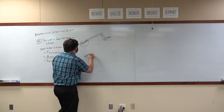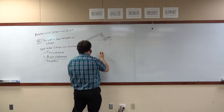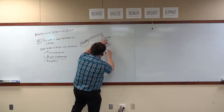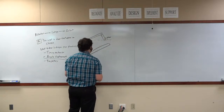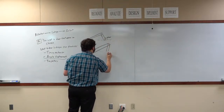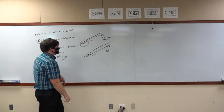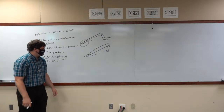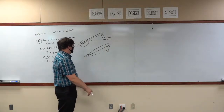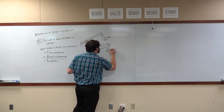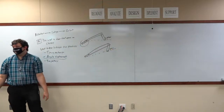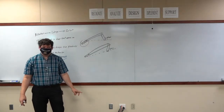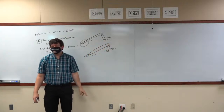Similarly — trying to draw my links the same length here — when the crank and coupler are collinear in the other direction, this represents the minimum angle that the rocker is going to experience. Maximum occurs at one location, minimum occurs at the other location. We can use this to define what our maximum and minimum positions are.